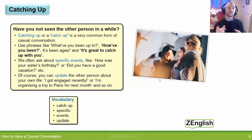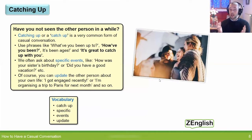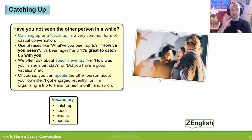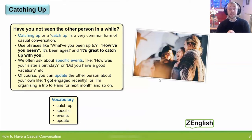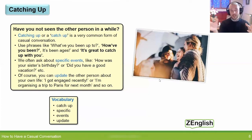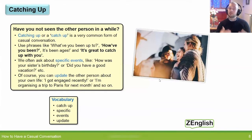Of course, we can also ask about specific events that have happened since we last saw them — events that we know about or have heard about. For example: 'how was your sister's birthday?' — because since we last saw that person, their sister had a birthday. Or: 'did you have a good vacation?' — because we know they've been away on vacation.